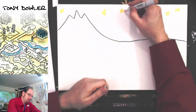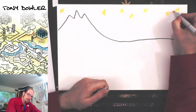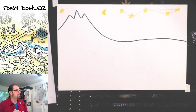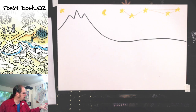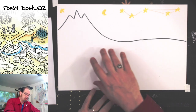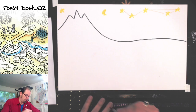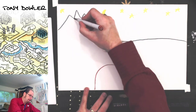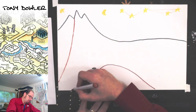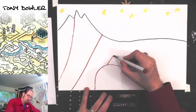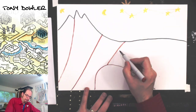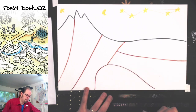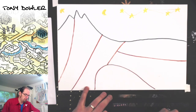Now we need to draw some lines on this map to show what is underground, because this isn't just all rock — there's going to be a lot more going on than that. So let's draw a few lines here to define the underground zones.